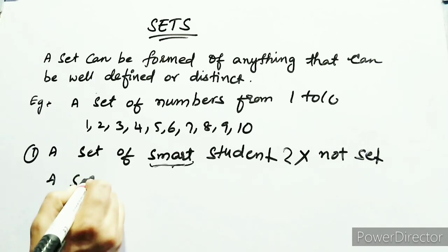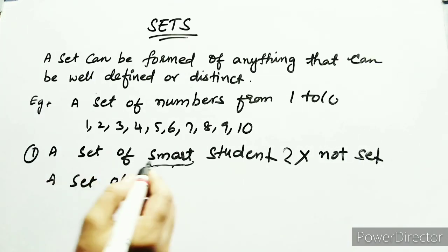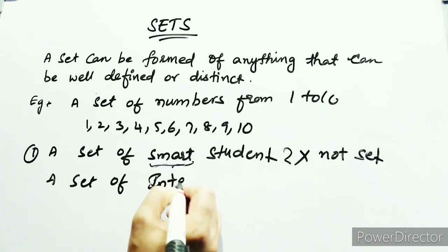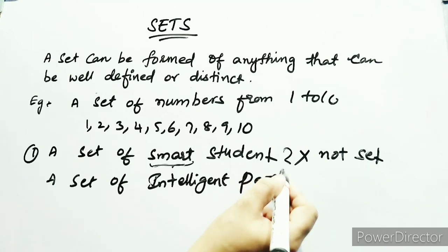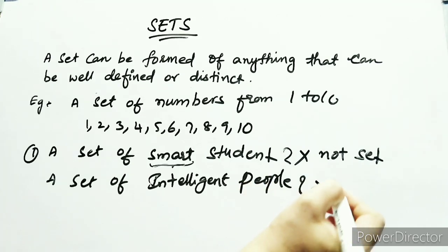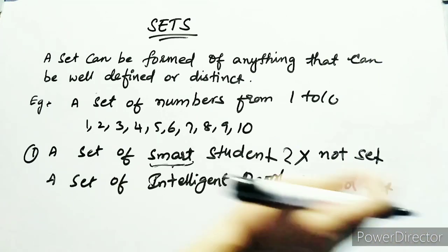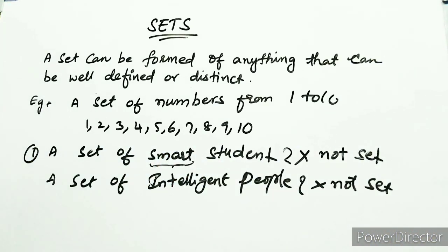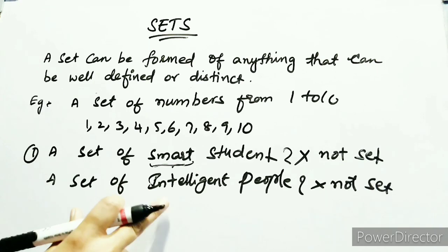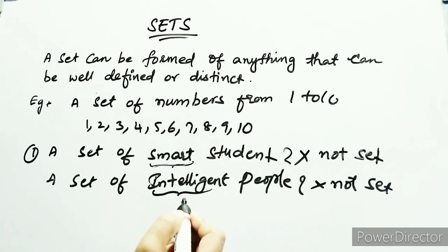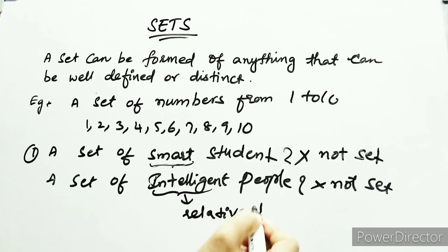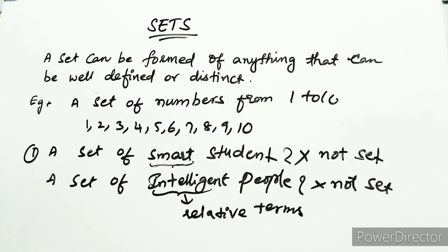Take another example: a set of intelligent people. It is also not a set. You cannot define intelligent people because 'intelligent' cannot be defined or measured — there are so many intelligent people. These types of words are called relative terms. A set must be well defined or distinct.